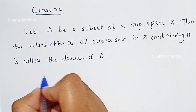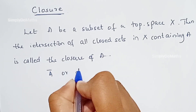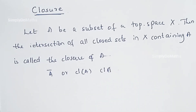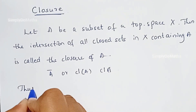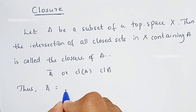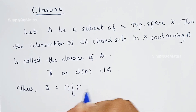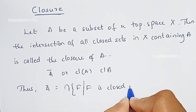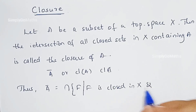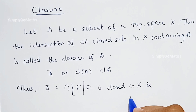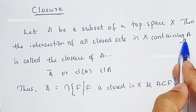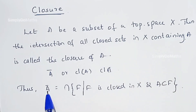It is denoted by Ā, or sometimes we write cl(A). So, Ā is defined as the intersection of all closed sets. Let's consider F as a closed set — F is closed in X and A should be a subset of F. The closed set should contain A itself, and then we call this the closure of A.